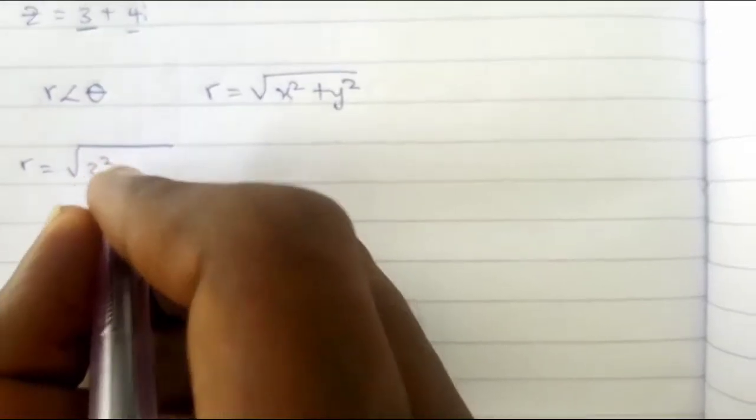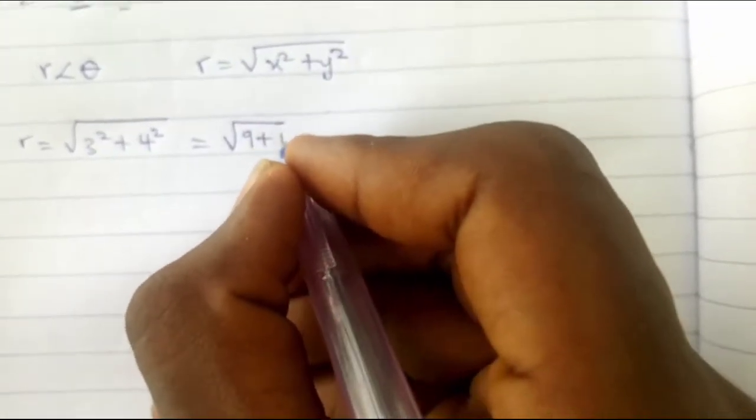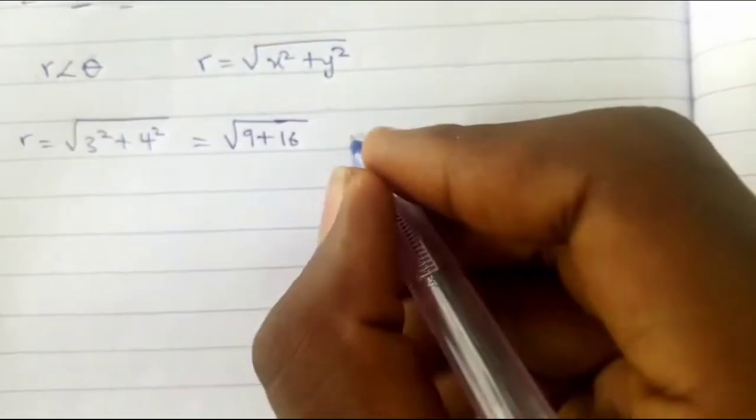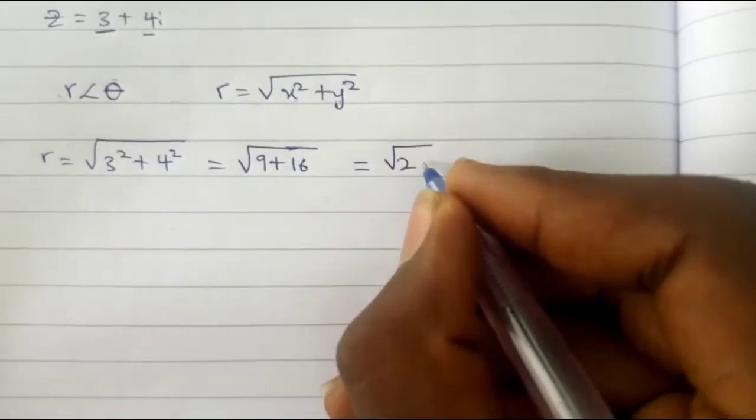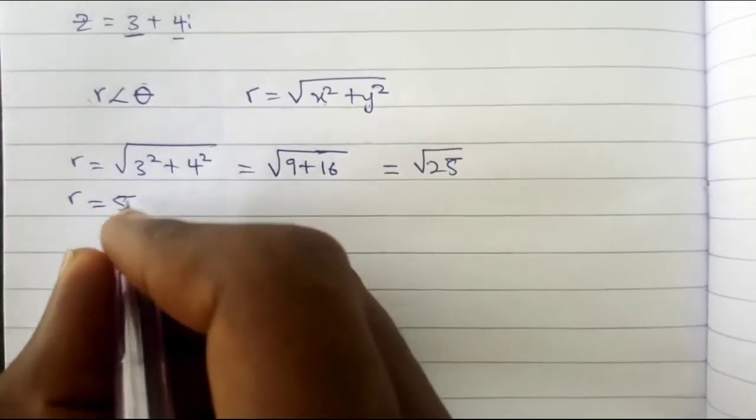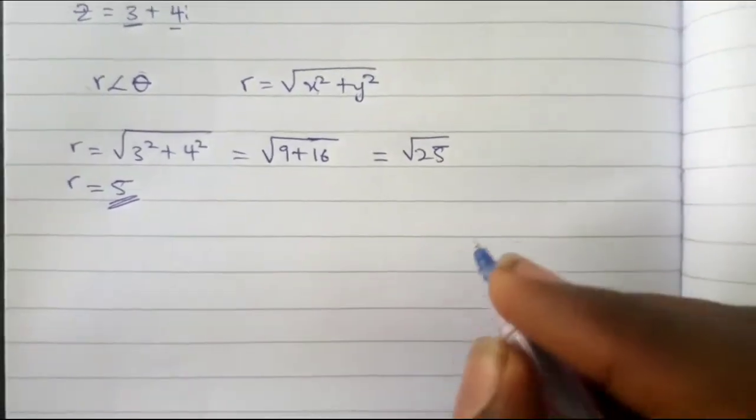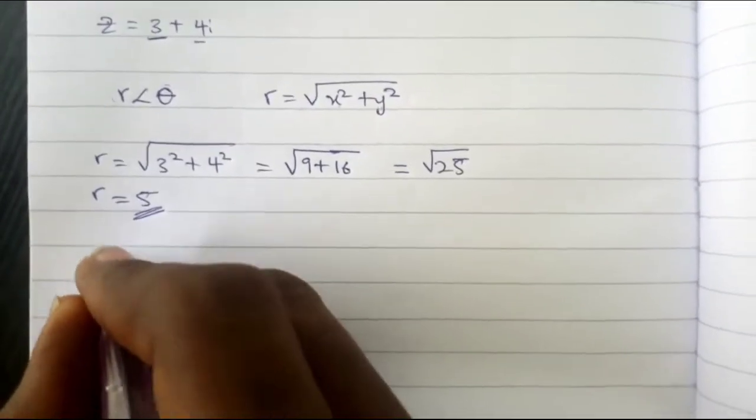So now r is going to be equal to square root of 3 squared plus 4 squared, which is equal to square root of 9 plus 16 equals square root of 25. Our r is going to be equal to 5. So we've gotten our r.